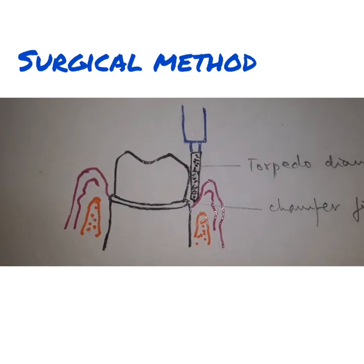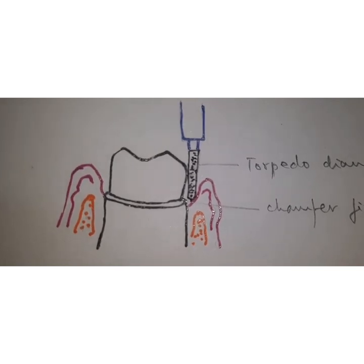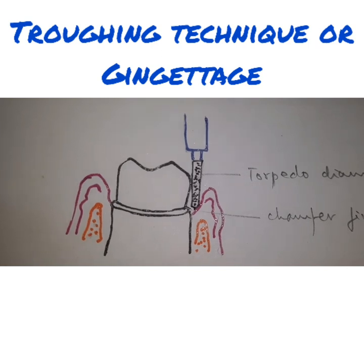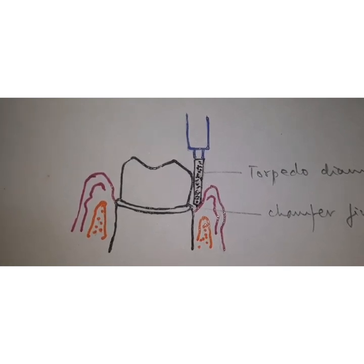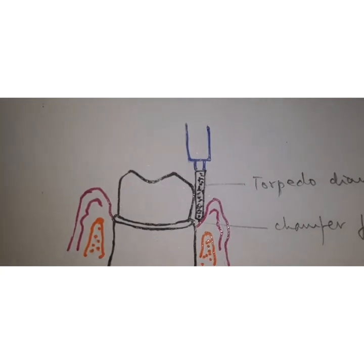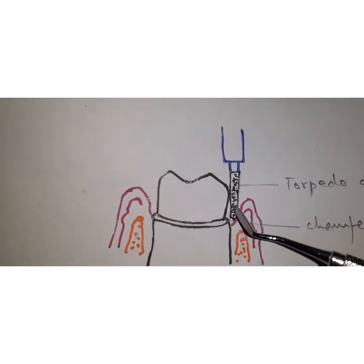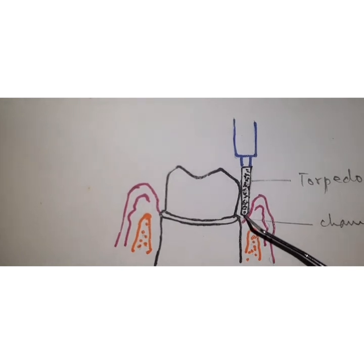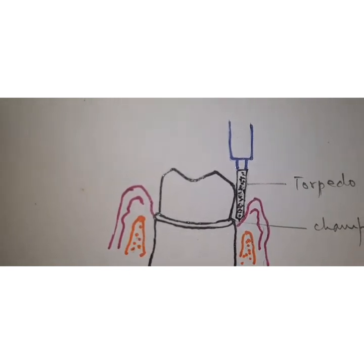The next method is the surgical method, which is of two types: rotary curettage and electrosurgery. Rotary curettage, also called the truffing technique or gingitage, is aimed at limited removal of the epithelial tissue in the sulcus while creating the chamfer finish line. Using a torpedo diamond bur on a healthy, well-keratinized gingiva, you eliminate some part of the gingival tissues to expose the finish line.